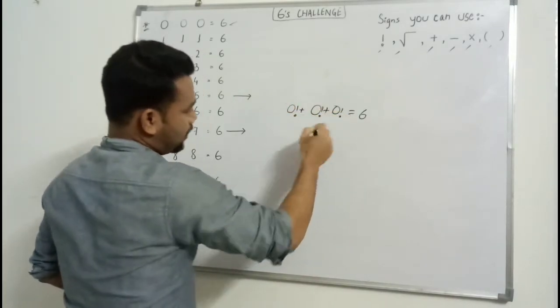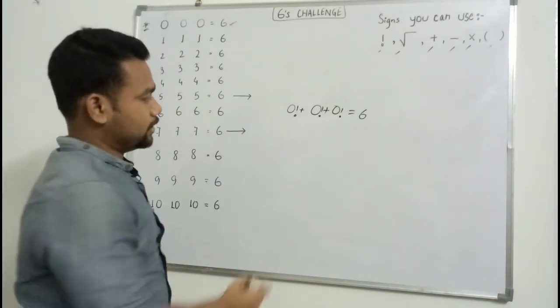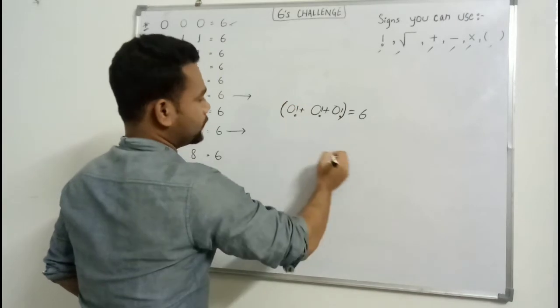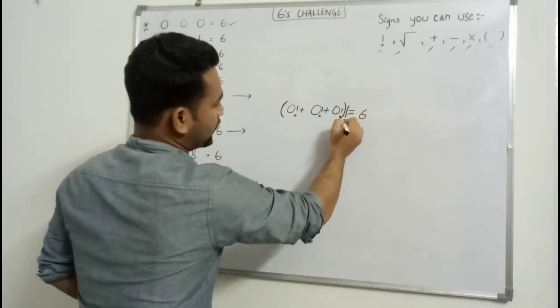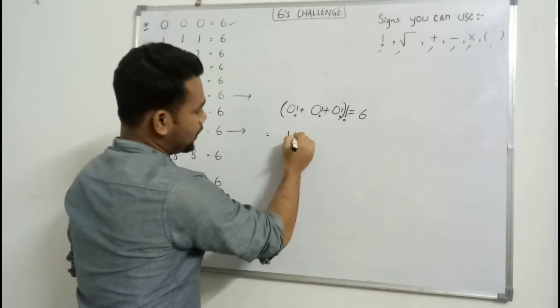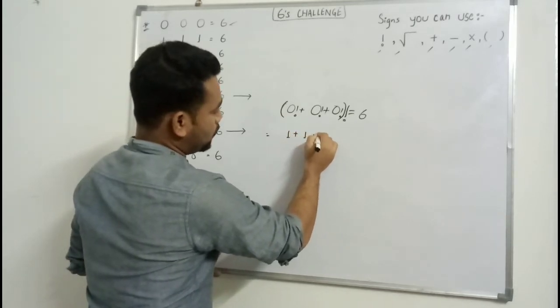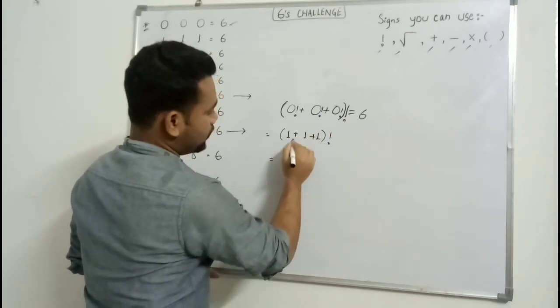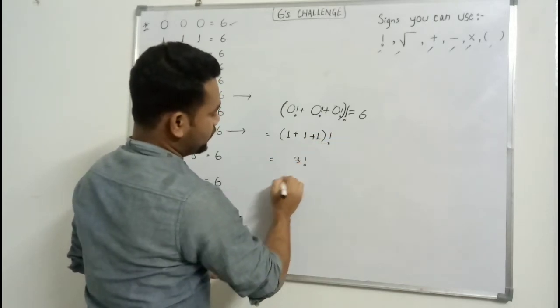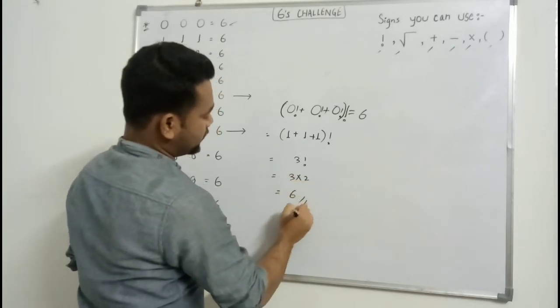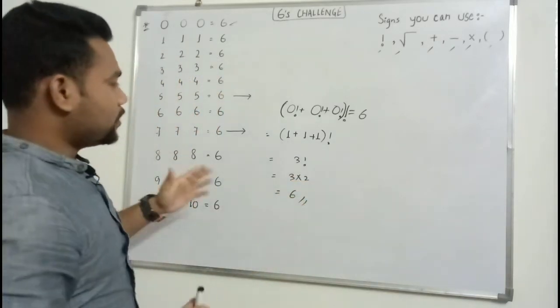I will be giving you a bracket here and then again a factorial sign. Zero factorial means one plus one plus one, and then it's a bracket and a factorial sign. It's three factorial, three factorial means three into two and it gives six.